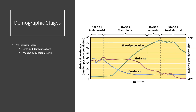In stage one, we tend to have high birth rates but a correspondingly high death rate. Our population growth during that pre-industrial stage would be pretty modest — low growth.